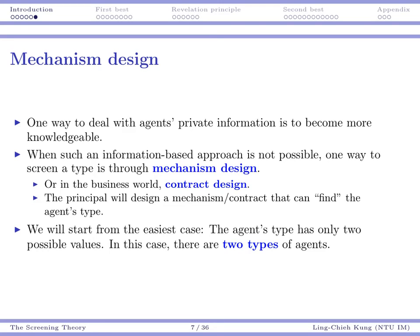Suppose the principal knows there is a private information problem — how may the manufacturer deal with that? The first thing to think about is for the principal to become more knowledgeable and get more information. For example, as an advisor, I could hold an exam for my students to reveal their reading ability, and if their English ability is too poor I may remove them from my lab. This is called the information-based approach — obtaining the private information directly solves the problem completely.